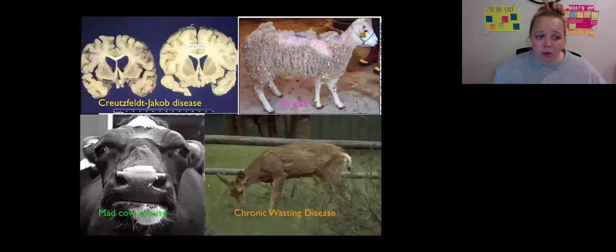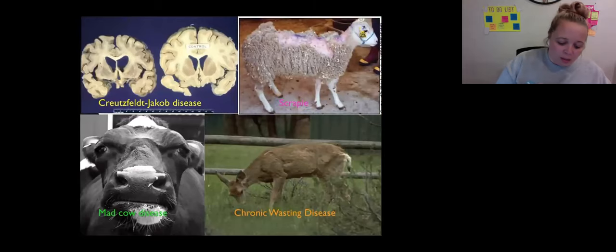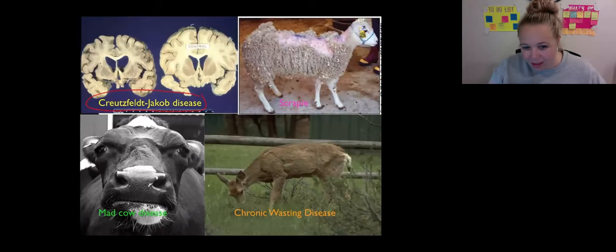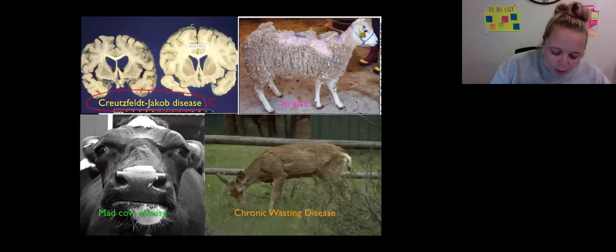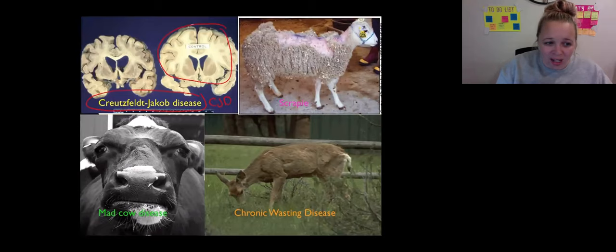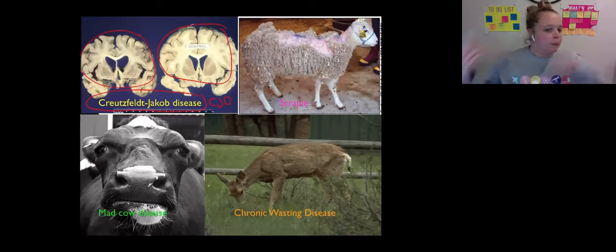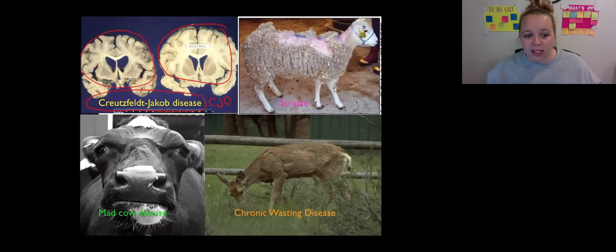And what they do is they cause all sorts of nasty diseases like this one. Now the biggest one here is called Creutzfeldt-Jakob disease, or CJD. So here is a normal healthy brain on the right, and if a prion manages to get into your brain this is what it does. Essentially it just rips around and tears apart your brain. Pretty nasty.